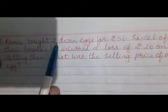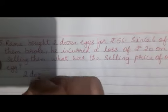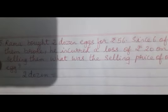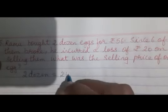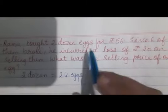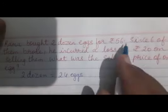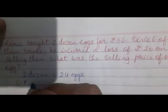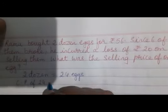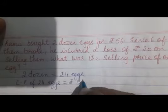First of all, Ramu has brought two dozen. Two dozen means 24 eggs, since one dozen is 12. Ramu has brought two dozen eggs for Rs.56, so the cost price of 24 eggs is Rs.56.